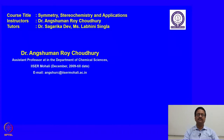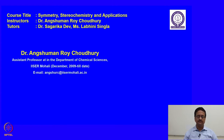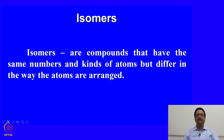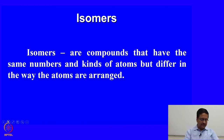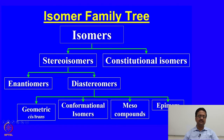Welcome back to the course on symmetry, stereochemistry and applications. In the previous lecture we discussed conformational aspects related to cyclohexane and substituted cyclohexane molecules. Now we move to the next part of this course: isomerism, how to represent different isomers using projection formulas, and their significance. Isomers are compounds that have the same numbers and kinds of atoms but differ in the way the atoms are arranged.